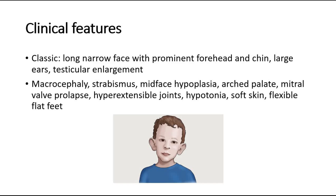The classic features for males with full mutation: physical features include a long and narrow face with prominent forehead and chin, as you can see in this picture, with large ears and also testicular enlargement.